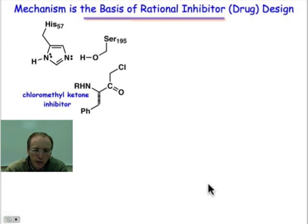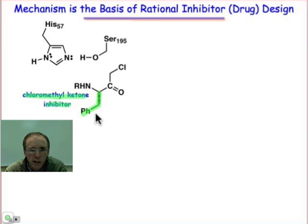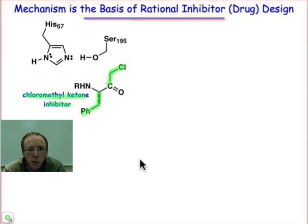Let's take a look at a suicide inhibitor. In this case, this chloromethyl ketone inhibitor actually sends the reaction down the normal pathway. You can see that there's a structure that looks an awful lot like phenylalanine, and so there's some recognition going on with respect to something that looks like the naturally occurring substrate, but we've got this chloromethyl group out here that's going to fool the enzyme into doing something that it doesn't want to do.